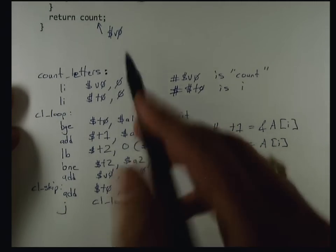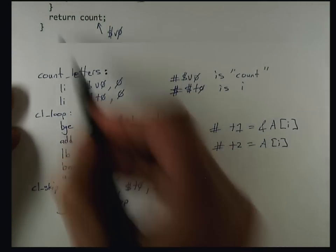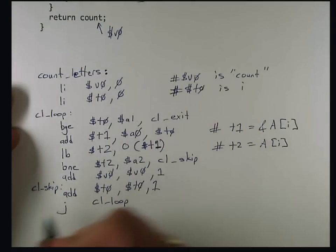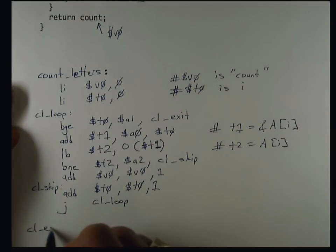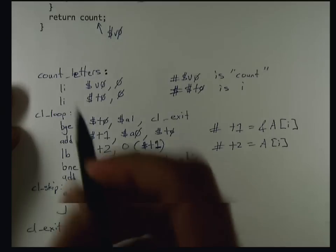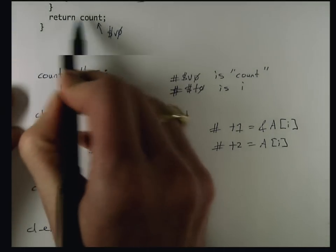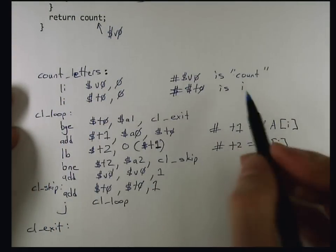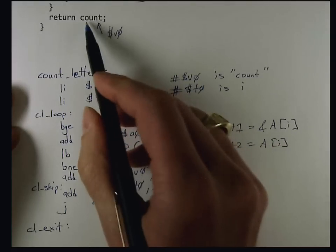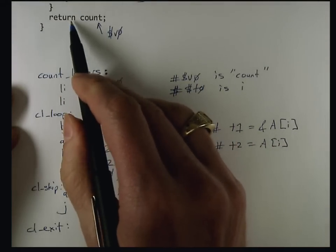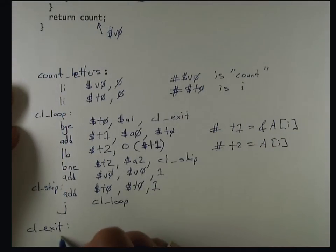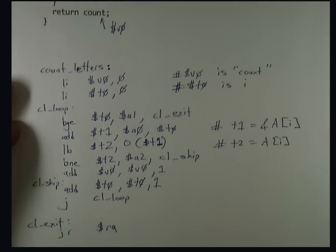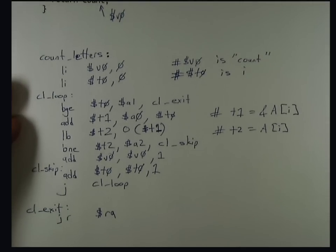We have this CL_exit for when we exit the loop, so we then add that label. All that's left to do is return from the function. Count is already in V0, so there's nothing to be done except for the control flow. I need a jump register to the register RA, and that completes this function.